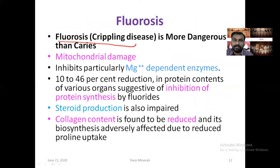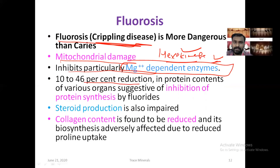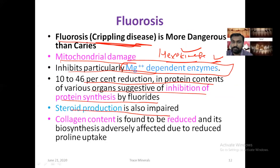Fluorosis is a crippling disease — more dangerous than caries. It causes mitochondrial damage and inhibits magnesium-dependent enzymes, such as those in glycolysis like hexokinase and enolase. There is a 10 to 40% reduction in protein content of various organs, suggestive of inhibition of protein synthesis by fluoride. Steroid production is also impeded, and collagen content is found to be reduced, with its biosynthesis adversely affected.